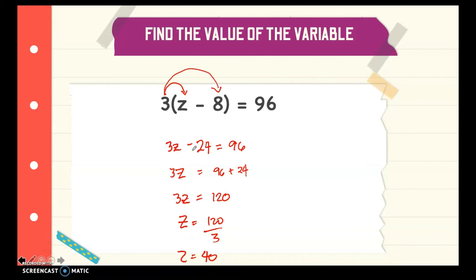To check if the solution is correct, substitute z equals 40 into the expression: 40 minus 8 equals 32, and 32 multiplied by 3 equals 96. Since both sides are equal, the answer is correct. That's how you find the value of the variable.